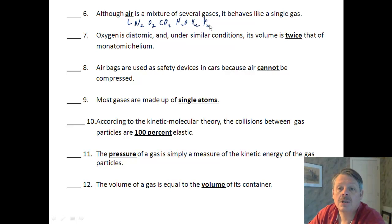Oxygen is diatomic—that's correct. And under similar conditions, its volume is twice that of monatomic helium. Well, similar conditions you might think of as, for example, STP. We know that any gas at STP takes up 22.4 liters. So this is wrong. It would be the same amount of space under similar conditions.